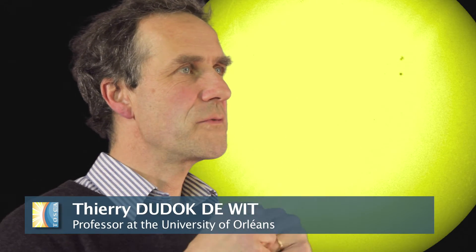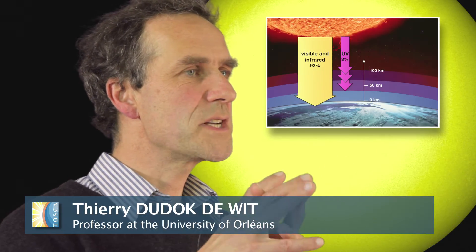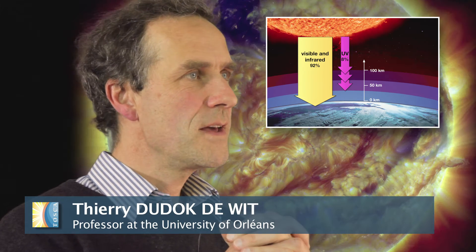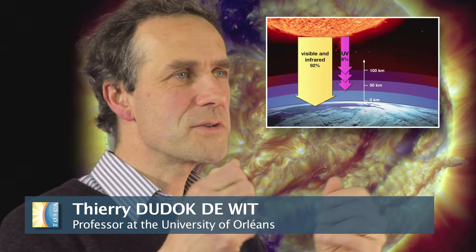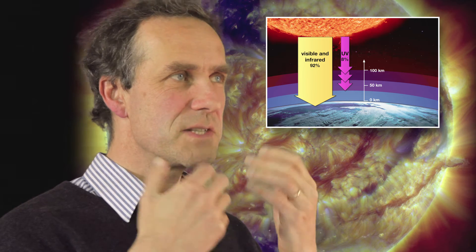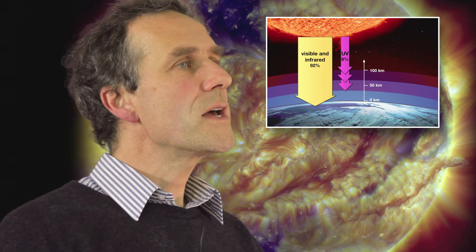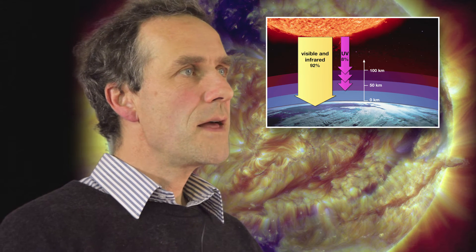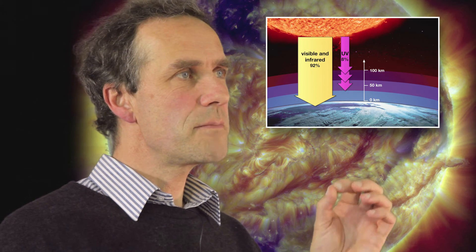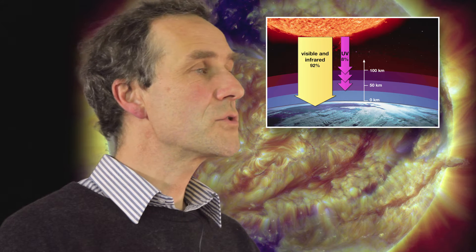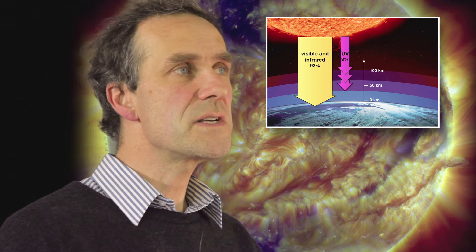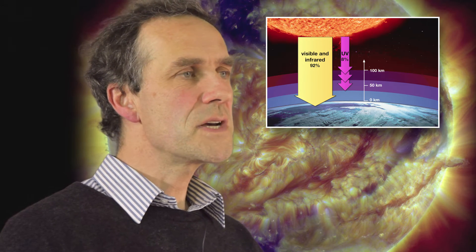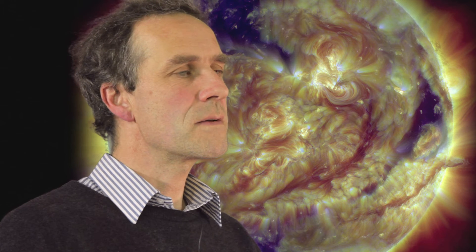The Sun emits different types of radiation which we characterize by their wavelength. We all know about visible light because this is something we can see with our eyes. Then you have infrared radiation which we feel like heat. And finally, there's this tiny part which is called ultraviolet radiation which we can't see with our eyes. But it does play an important role in climate studies.